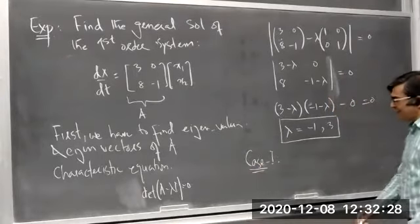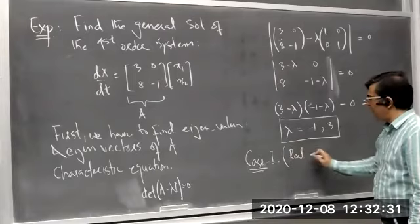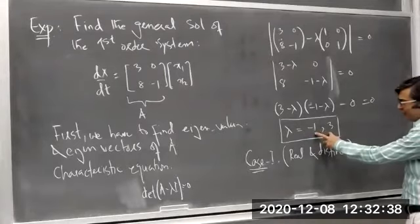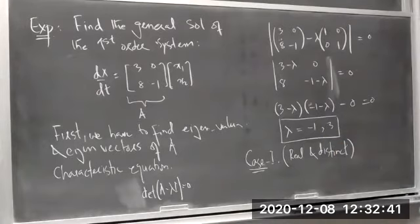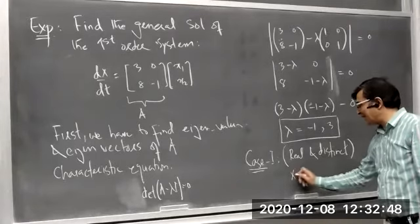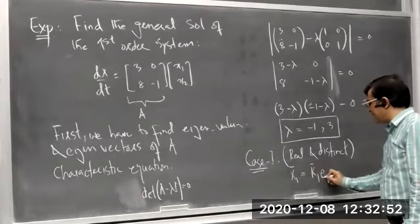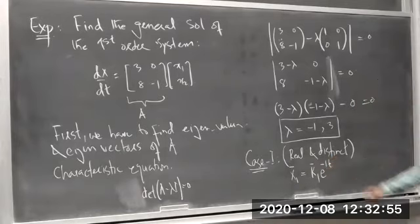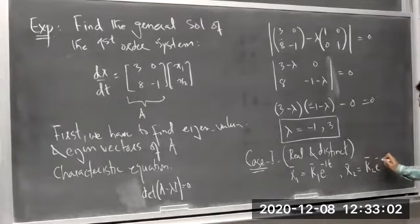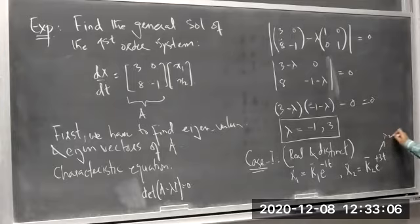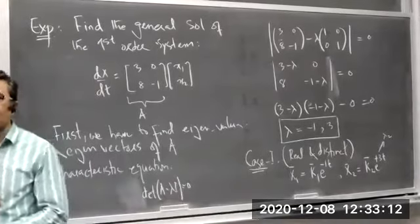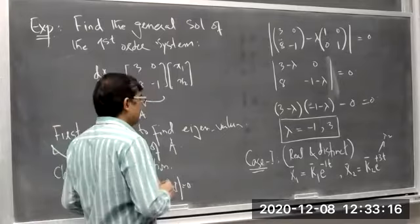This is Case 1: eigenvalues are real and distinct. You can see that the eigenvalues are real numbers and distinct. In that case we can always obtain two linearly independent solutions: x1 = k1·e^(−t) corresponding to λ₁ = −1, and x2 = k2·e^(3t) corresponding to λ₂ = 3. If the roots are real and distinct, we can always find linearly independent solutions corresponding to each eigenvalue.